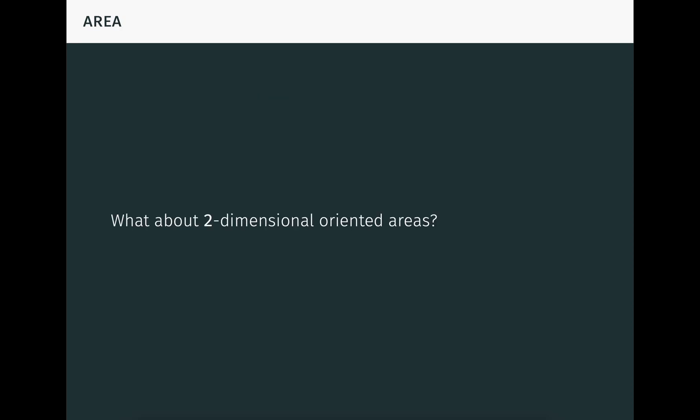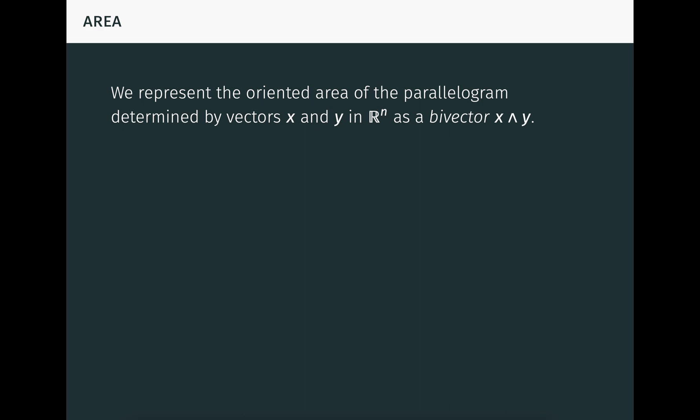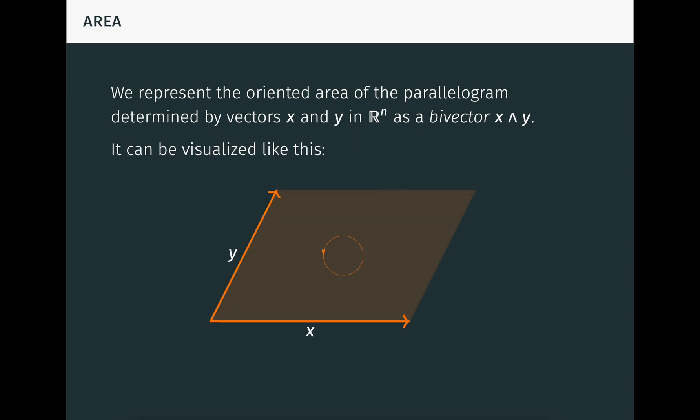What about two-dimensional areas? We represent the oriented area of the parallelogram determined by two vectors x and y in Rⁿ as a bivector, written x wedge y. The bivector can be visualized like this. Here we see the vectors x and y, and we also see the area of the parallelogram determined by them shaded in orange. The orientation of the area is indicated by the little circular arrow, which shows that the orientation goes first in the direction of x and then in the direction of y, corresponding to the order of x and y in the expression x wedge y. So the order of x and y matters here. As we did with oriented length, we're ignoring the position of an oriented area in the ambient space. But importantly, we're also ignoring its shape as a plane segment. Any two areas of the same magnitude which are parallel and oriented in the same direction are considered equal. So we're not representing parallelograms here, even though we're using them for visualization. We're representing their oriented areas.